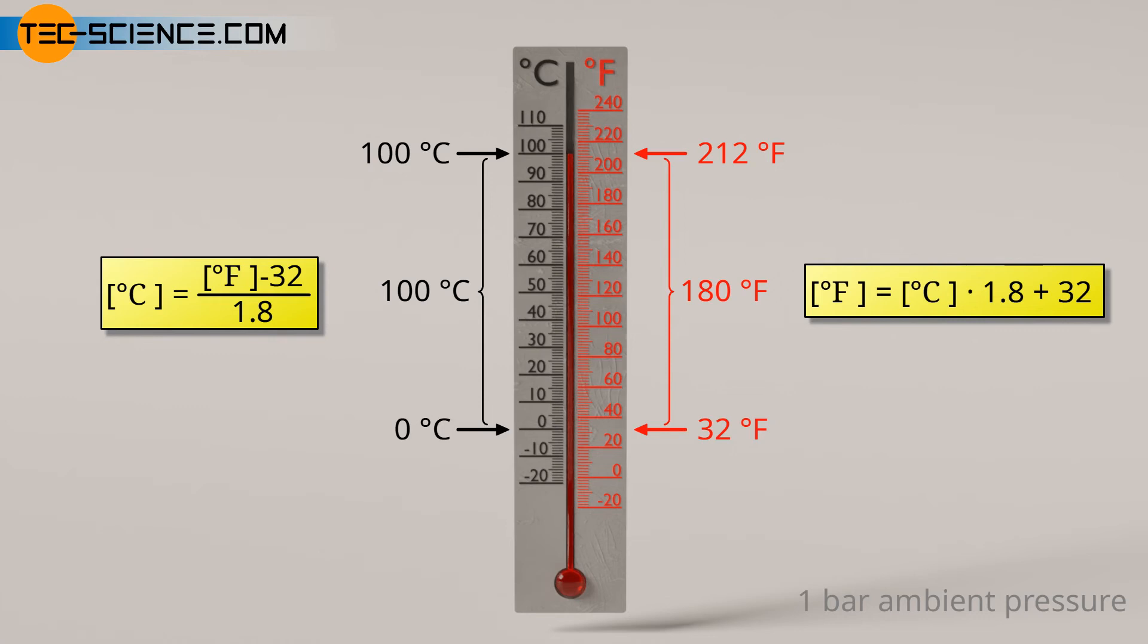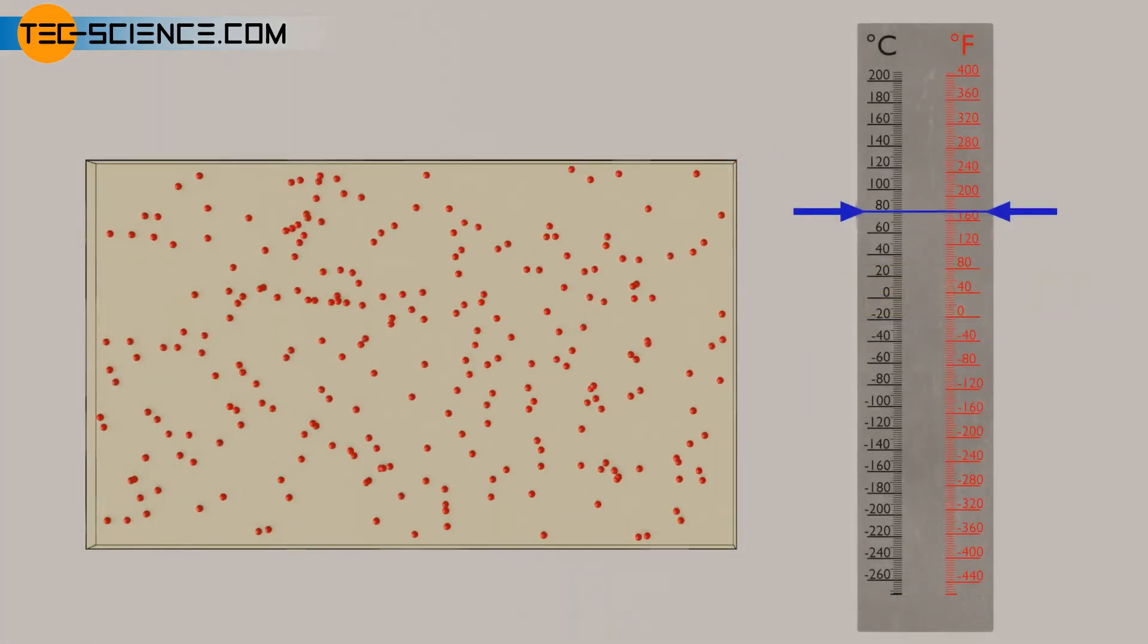The Celsius scale, and also the Fahrenheit scale, are not very scientific due to the arbitrary determination of the reference points. Rather, a physically meaningful temperature scale should take into account the fact that temperature is a measure of the magnitude of the movement of the molecules.